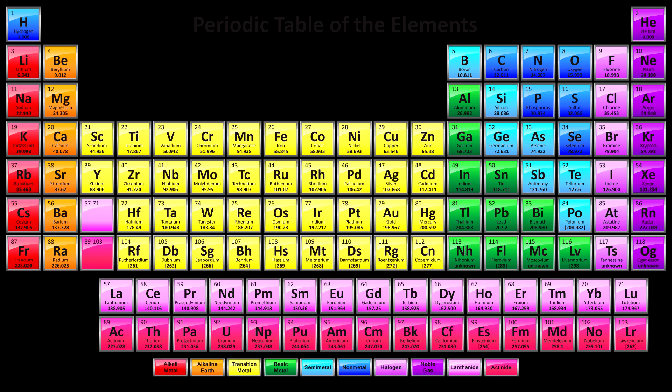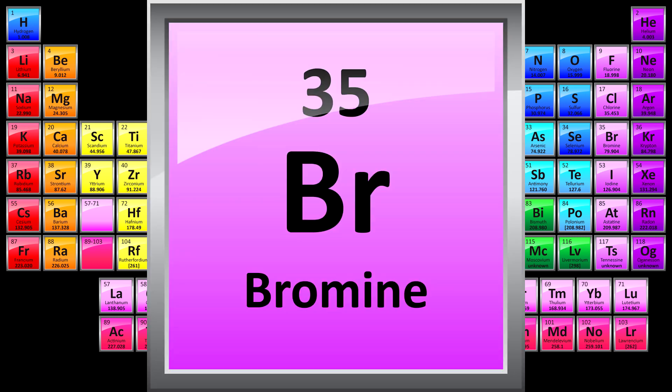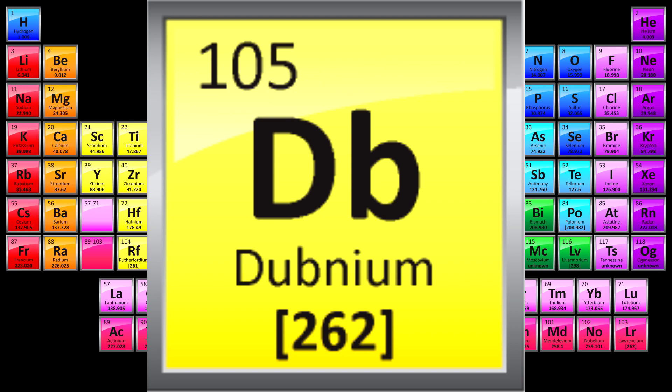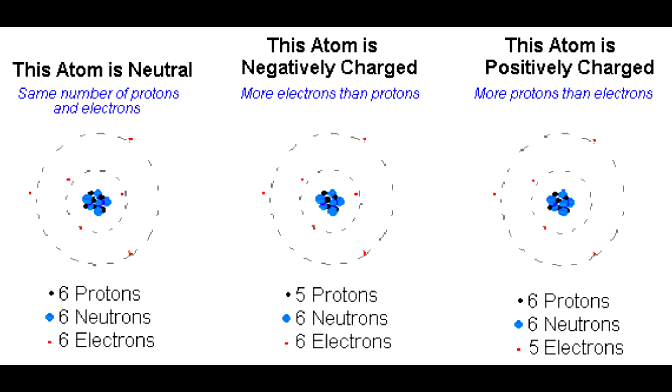The number of protons defines which element the atom is. For example, 6 protons is carbon, 35 protons is bromine, and 105 protons would be dubnium. Then the number of neutrons defines which isotope of the element you have. There are also electrons, which say something about the ionic charge of the atom. But ions and isotopes are something for another video.